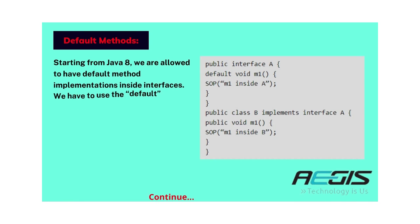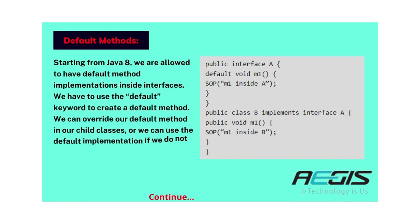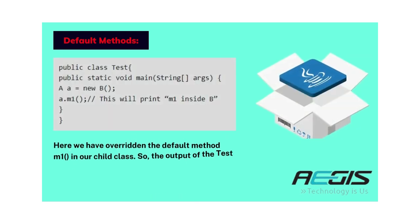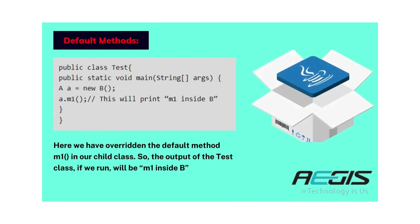The third feature is default methods. Starting from Java 8, we are allowed to have default method implementations inside interfaces. We have to use the default keyword to create a default method. We can override the default method in our child classes, or we can use the default implementation if we do not want to override. In the above example, we have overridden the default method M1 in our child class, so the output of the test class will be 'M1 inside B'.